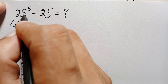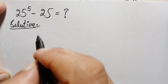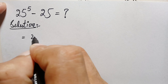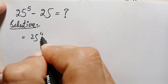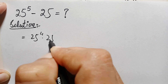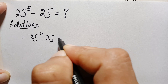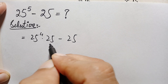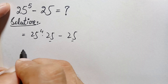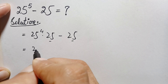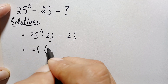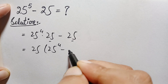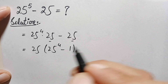First of all, we can write 25 raised to power 5 as 25 raised to power 4 times 25 raised to power 1, or simply 25. Now there is 25 common in both numbers, so we factor it out: this is 25 times (25 raised to power 4 minus 1).